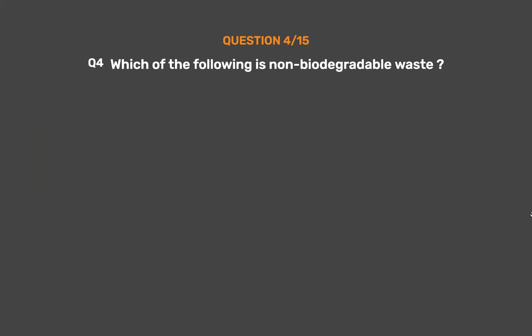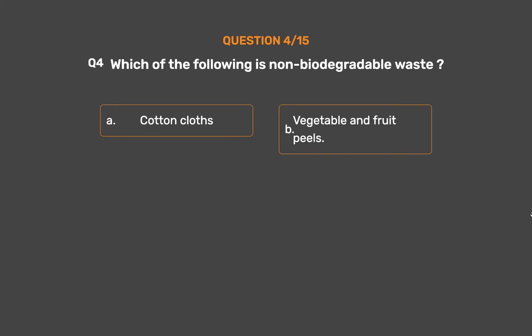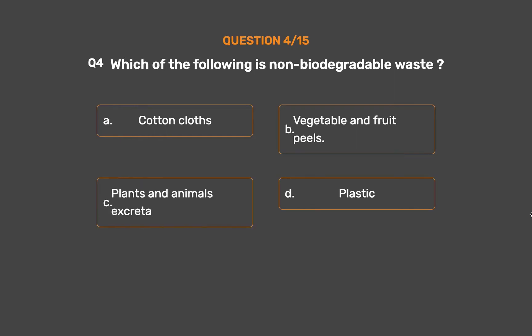Question Number 4. Which of the following is non-biodegradable waste? Option A: Cotton cloths. Option B: Vegetable and fruit peels. Option C: Plants and animals excreta. Option D: Plastic.